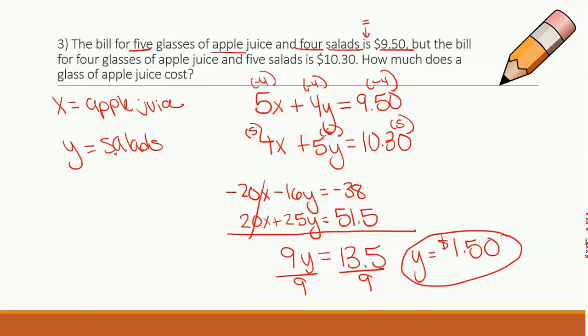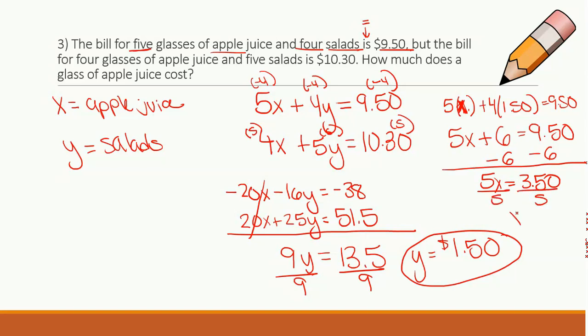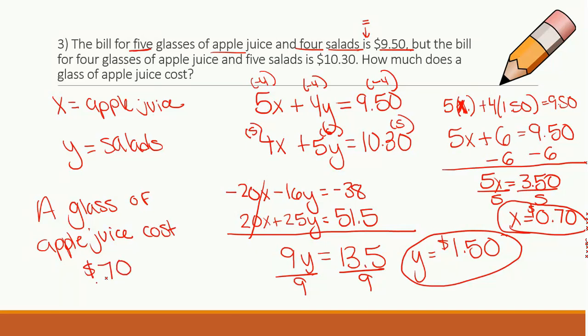So it's $1.50 for salads. I need apple juice. So let's plug into one of my formulas. I am going to plug into the top equation. So I'm going to get 5 times x, because I don't know my x yet, plus 4 times $1.50 equals 9.50. So I got 5x plus $6 equals 9.50. Subtract 6 from both sides. You get 5x equals $3.50. Divide by 5. Now you get x equals 0.70, or 70 cents, right?